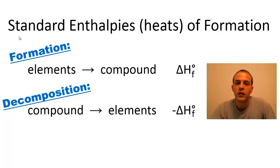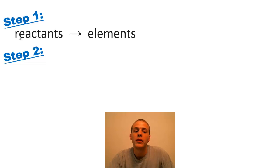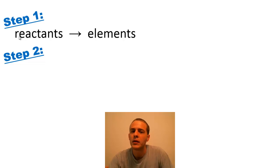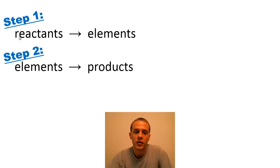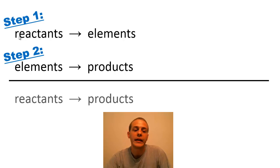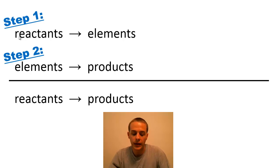We can use this to devise a scheme for how to calculate the standard heat of a chemical reaction. We're going to imagine that the reaction takes place in two steps. In the first step, the reactants break apart into their constituent elements. Now this may or may not be how the reaction actually takes place, but that doesn't matter because enthalpy is a state function — it doesn't matter how we get from start to finish, just what our starting and ending points are. In the second step, those elements come back together to form the products. When we add these two steps together, the elements cancel out and we get reactants forming products.